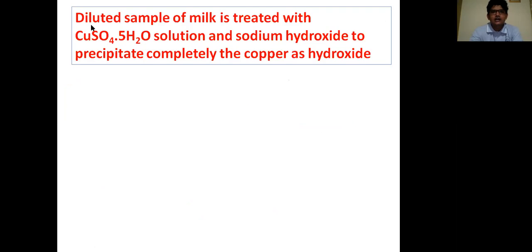Here the steps are again showing. Take a diluted sample of honey. Diluted sample of honey is treated with copper sulfate pentahydrate solution and sodium hydroxide to precipitate completely the copper as hydroxide. Here we can see the procedure.